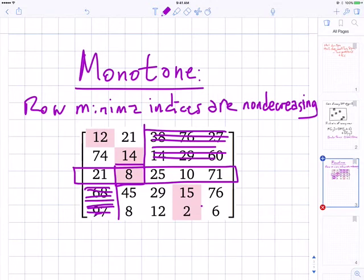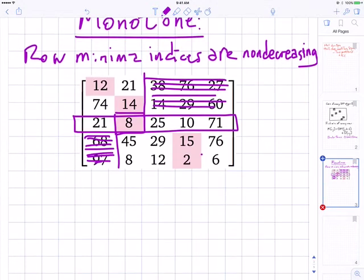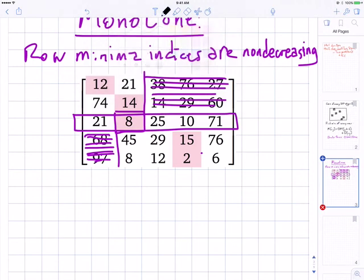So in any earlier rows, the row minima have to be either in the same column or further to the left. And in any later rows, the row minima either have to be in the same column or further to the right. And so, at least in principle, it looks like you have the basis for some kind of divide and conquer algorithm.